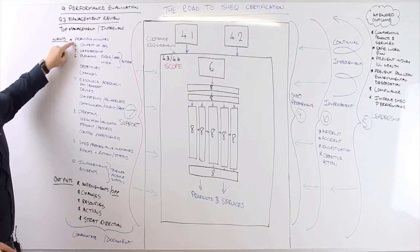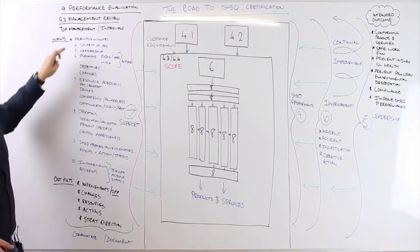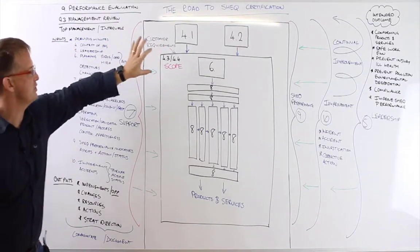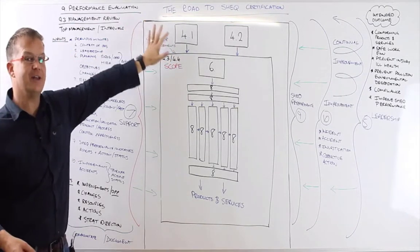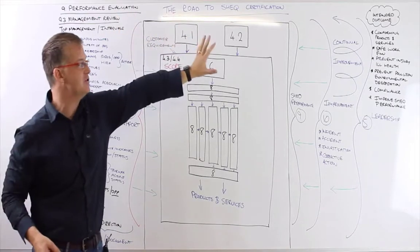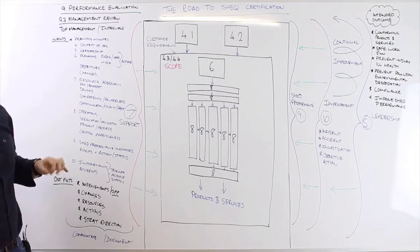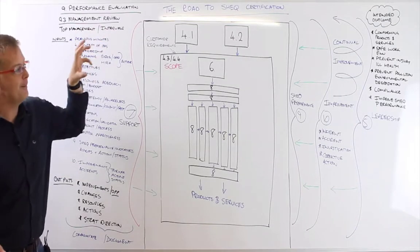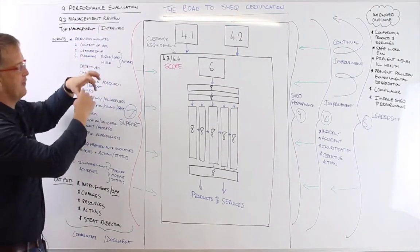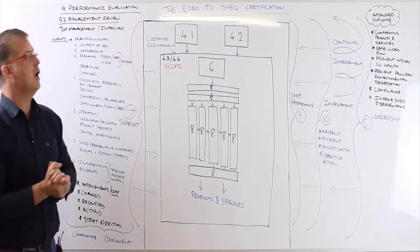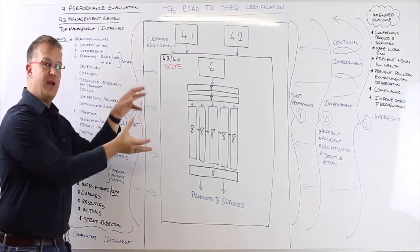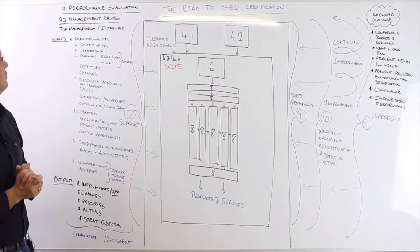We'd have a look at the status of issues from previous minutes. We'd have a look at the context of the organization, what changes have happened to our internal and external issues, or changes to our workers and interested parties' needs and requirements. We'd have a look at the effectiveness of leadership from top management's commitments and various different indicators on the demonstration of management commitment. Are we creating a positive SHE compliance culture in the organization?